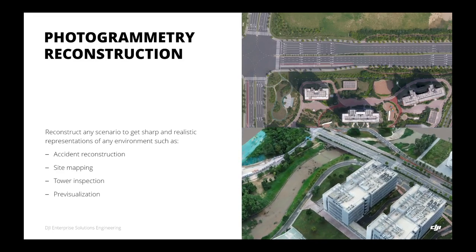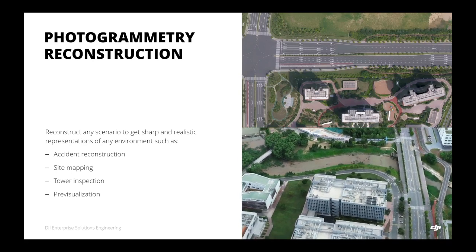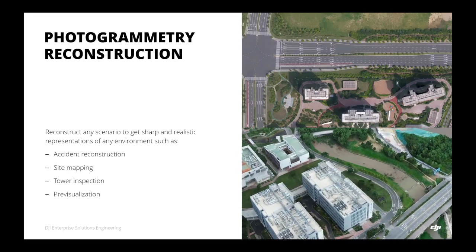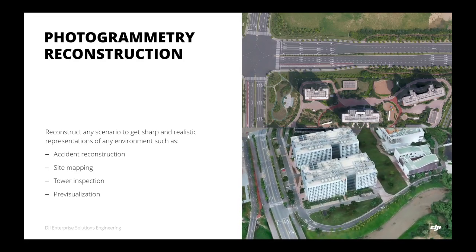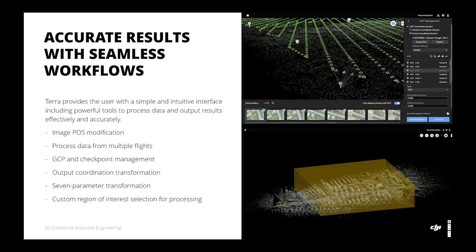Photogrammetry reconstruction is widely used in scenarios such as scene reconstruction, site mapping, vertical structure inspection for 3D modeling, and pre-visualization. Results processed from DJI Terra are very accurate and the workflow is very easy. DJI Terra provides a simple user interface packed with powerful tools. The image post-modification tool allows users to define and modify camera specifications. Users can also import multiple sets of data from different flights into one project and merge them as one deliverable.